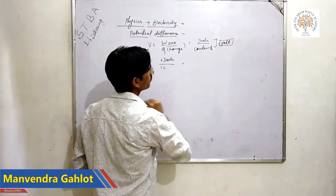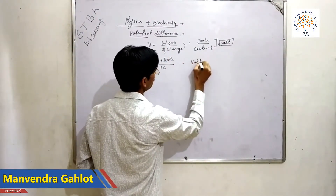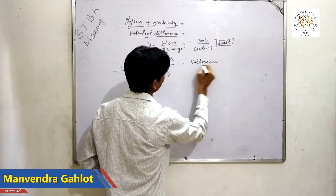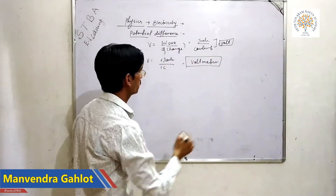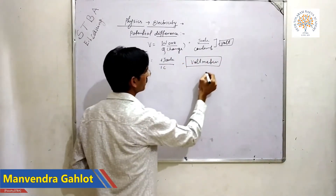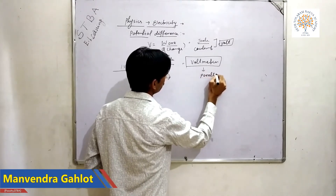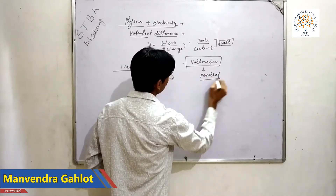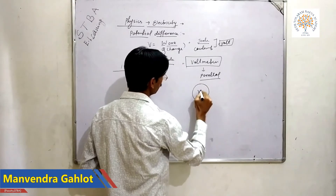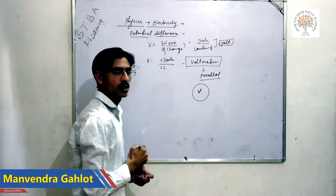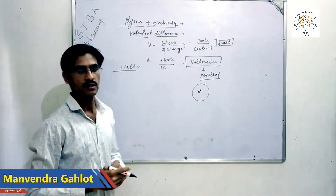Potential difference can be measured by a voltmeter. A voltmeter is always connected in parallel, and its symbol in an electric circuit is V.